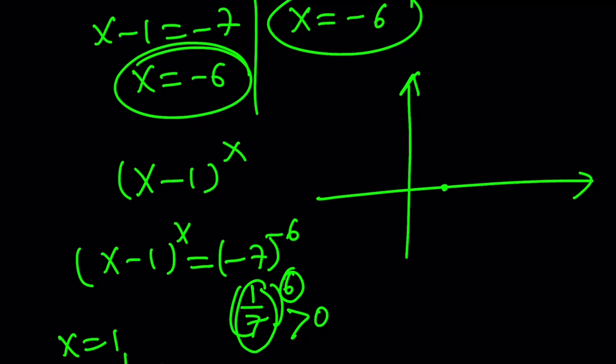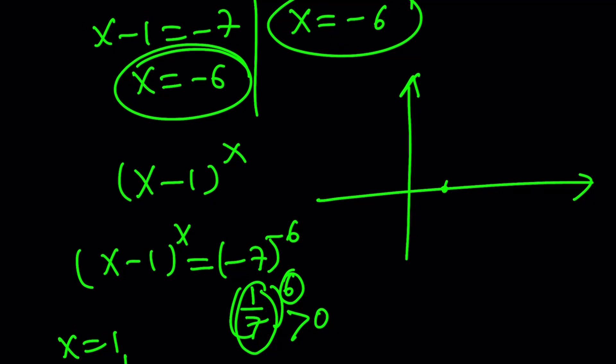And then our graph goes up like this. And this graph is always going to increase because it's similar to x to the power of x. We're just replacing x with another polynomial. Or we're kind of, well, not necessarily shifting the graph, but hopefully you get the idea. Therefore, x equals negative 6 is the only solution to this equation.